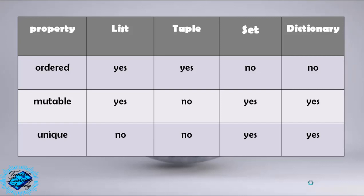Hello and welcome to this lecture of our course. Today we will talk about the comparison between Python data structures and their properties: ordered, mutable, and unique. List is ordered.